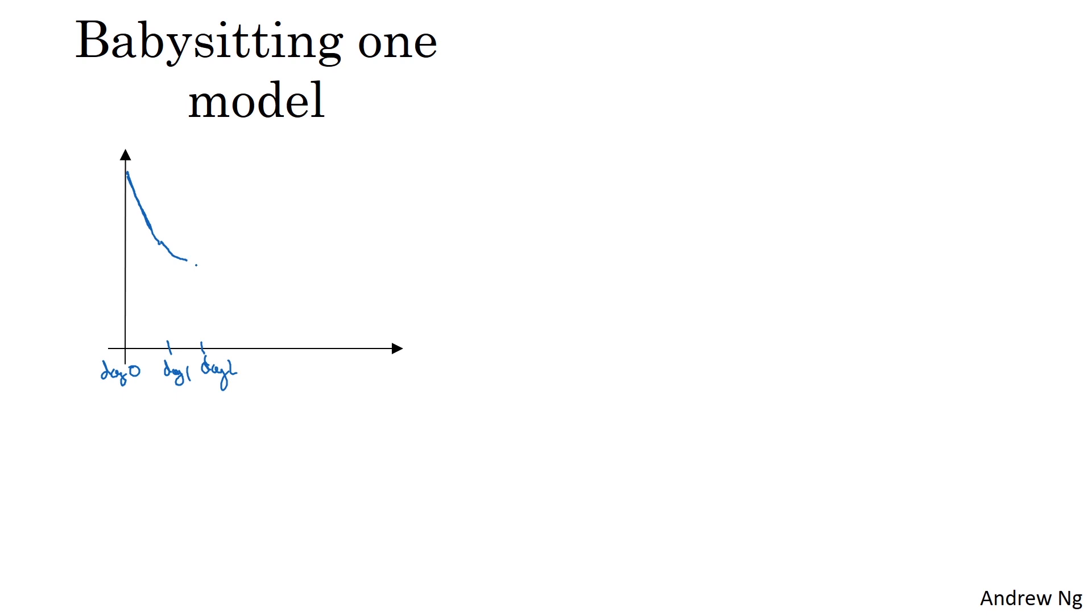And after two days, you say, okay, it's still doing quite well. Maybe I'll fiddle the momentum term a bit or decrease the learning rate a little bit now. And then you're now into day three. And every day, you kind of look at it and you'll try nudging up and down your parameters. And maybe on one day, you found your learning rate was too big, so you might go back to the previous day's model and so on. But you're kind of babysitting the model one day at a time, even as it's training over a course of many days or over the course of several different weeks.